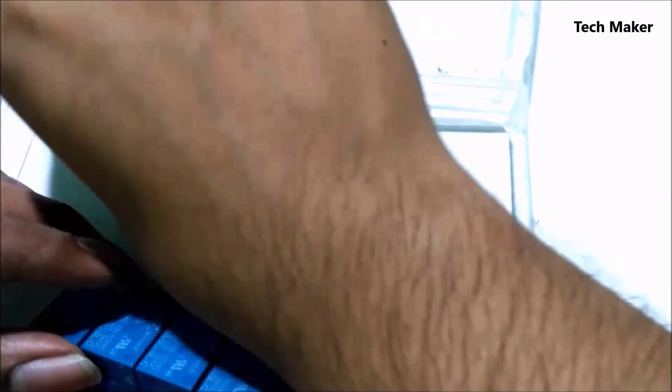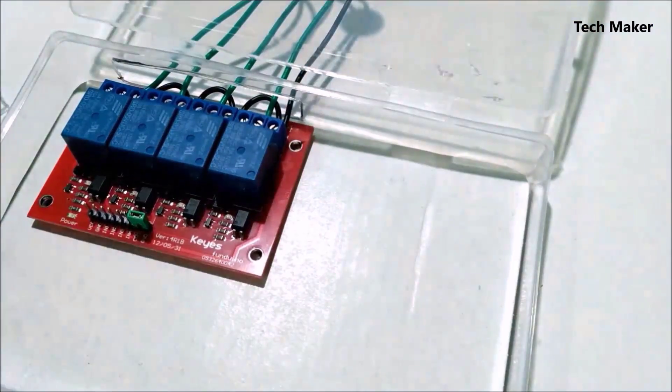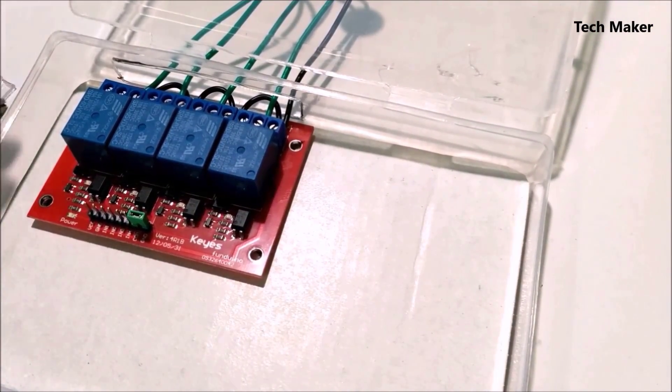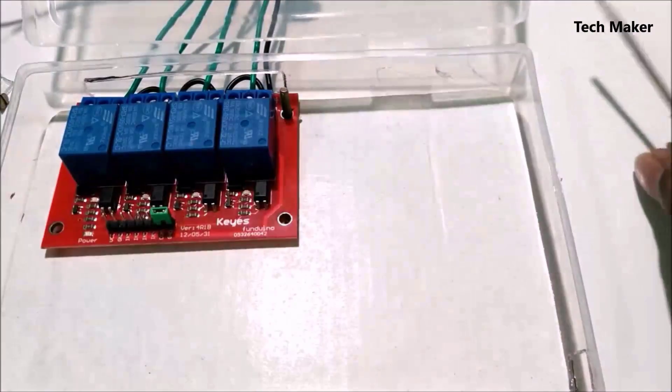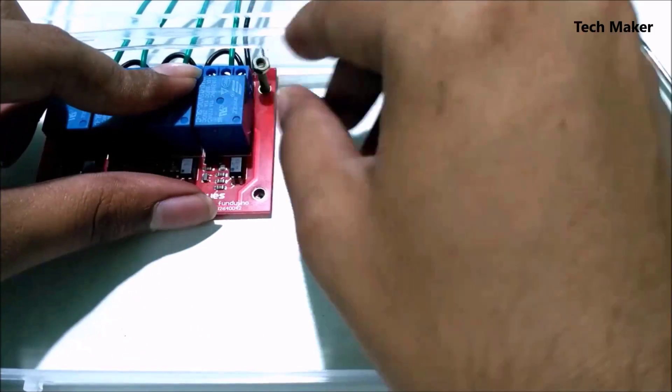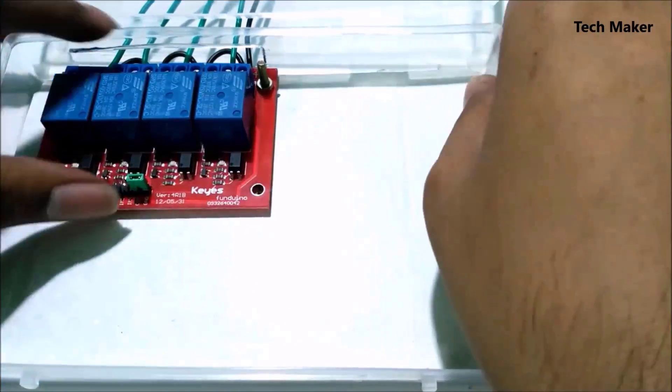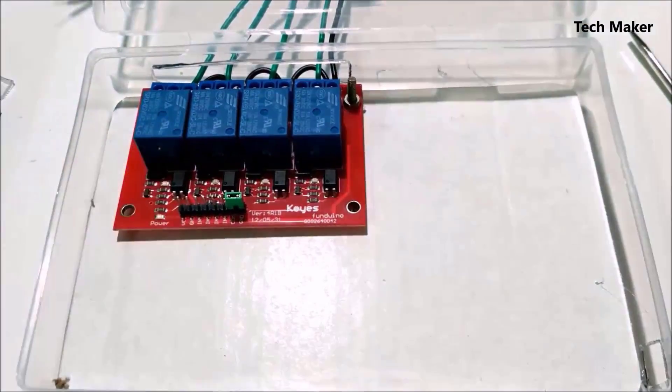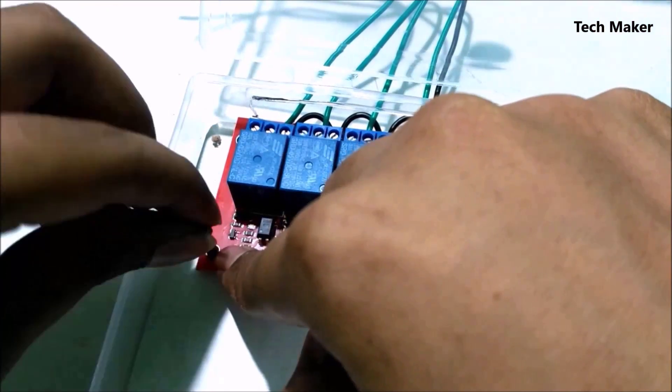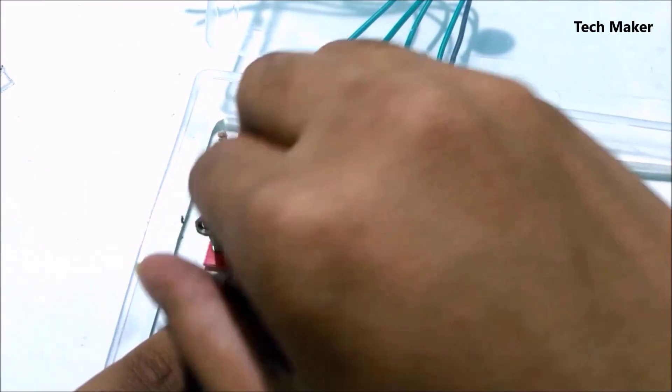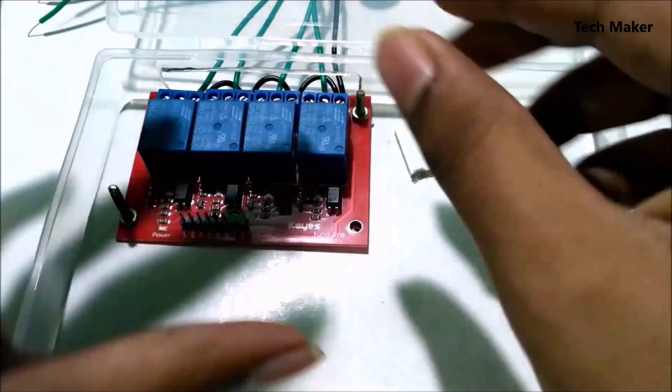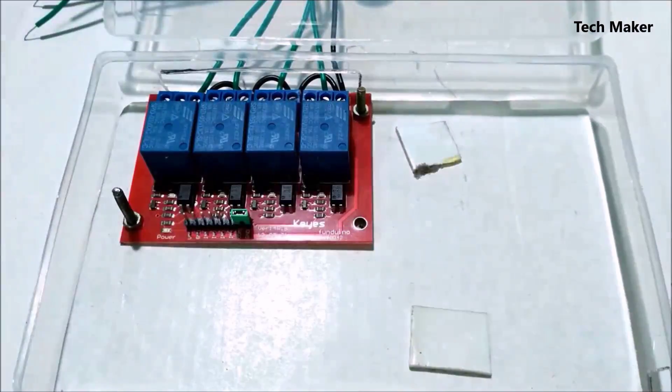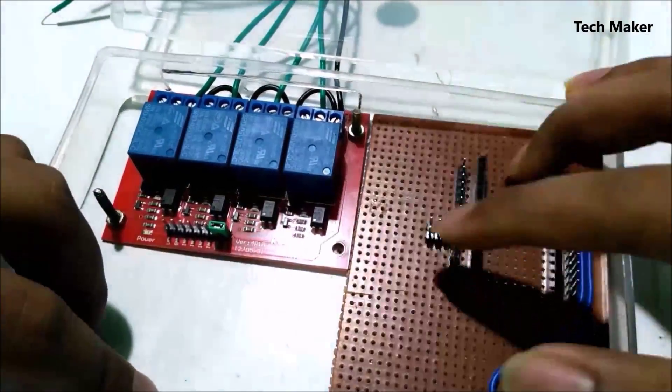Now place the relay board inside the box and fix it with the screws. Here I am taking the screws and fixing it. Now we have to take a double-sided tape and apply it on the cardboard.